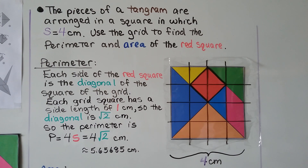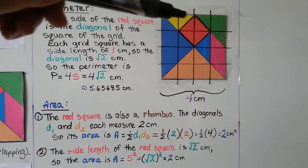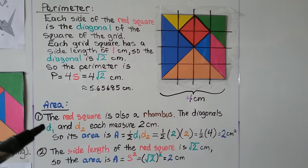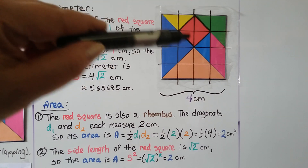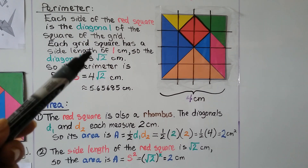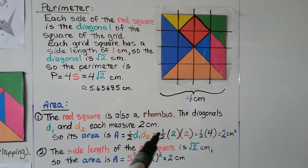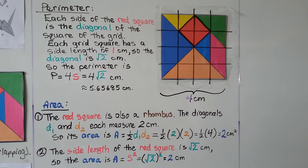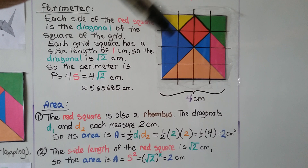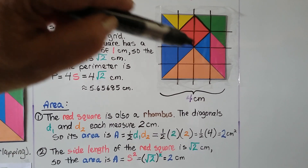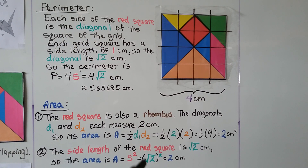We can also find the area. The red square is also a rhombus, and both diagonals d sub 1 and d sub 2 each measure two centimeters. So area equals half times d sub 1 times d sub 2, giving half times 2 times 2, which is half times 4, equaling 2 centimeters squared. We can verify this: the side length is the square root of two centimeters, so area equals side squared — square root of two raised to the second power — which also equals 2 centimeters squared.